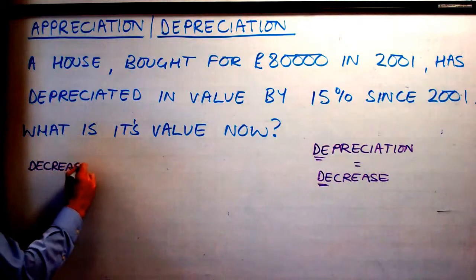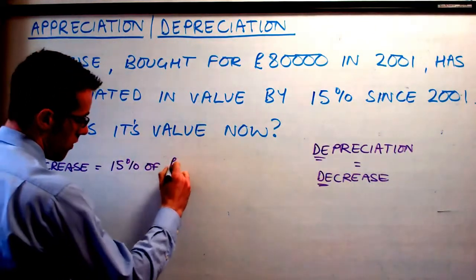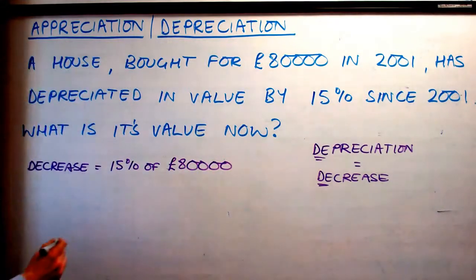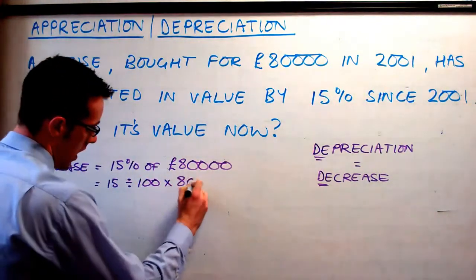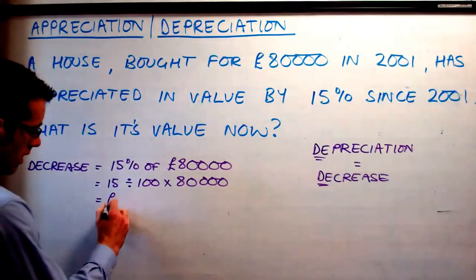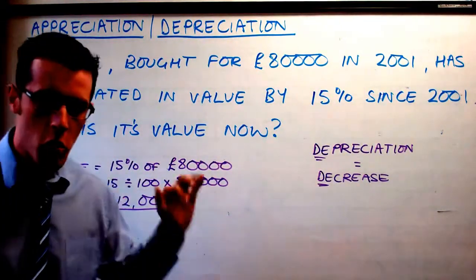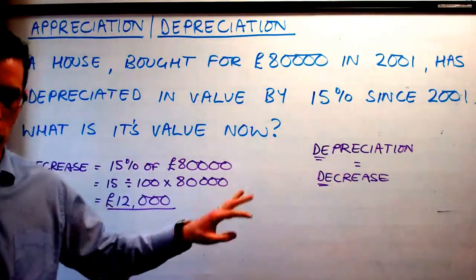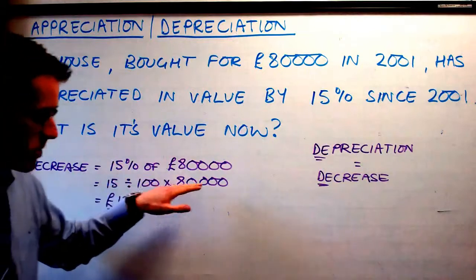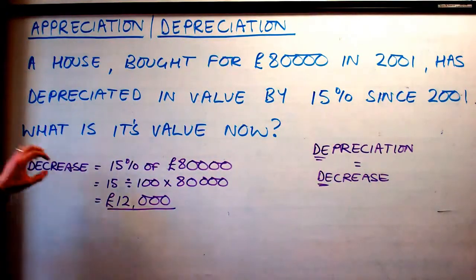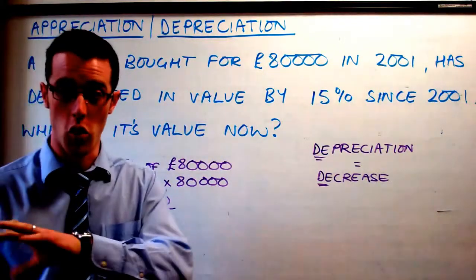Just like before, we have to find the decrease. That's 15% of £80,000, which is 15 divided by 100 times £80,000, giving us £12,000. That's the decrease since 2001 — the value has dropped by 15%, which we call depreciation because it happens over time. The difference between a percentage decrease and depreciation is that depreciation happens over a certain period of years.